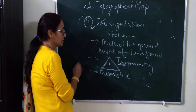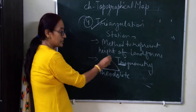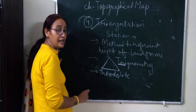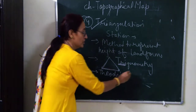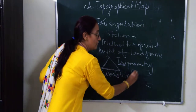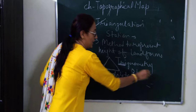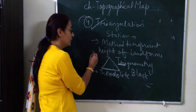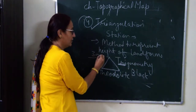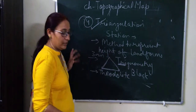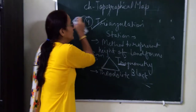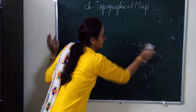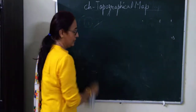The symbol used for triangulation station is a triangle. Black color is used for this symbol, and the height is also mentioned alongside the triangle — for example 300 meters, 400 meters.